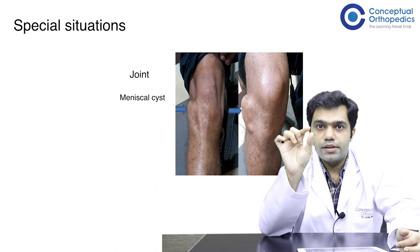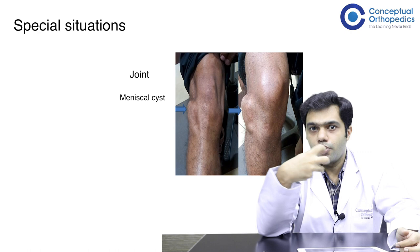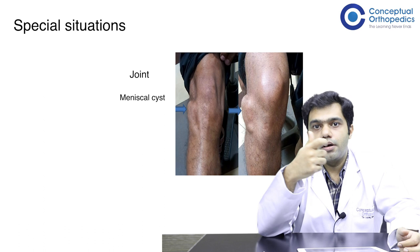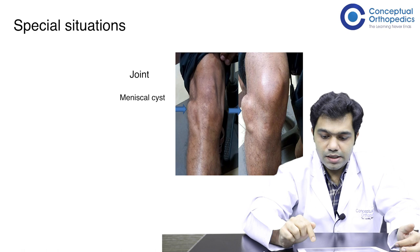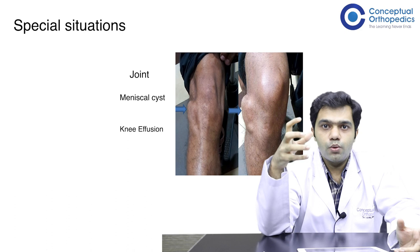This image demonstrates the meniscal cyst: the first image shows the swelling at a smaller size. Once the patient starts to flex, the contents inside the cyst become more prominent because as the knee flexes, congruency improves and the space reduces, forcing the cyst contents to come outside. In this image you can clearly see the swelling becomes more evident when the patient is flexing.